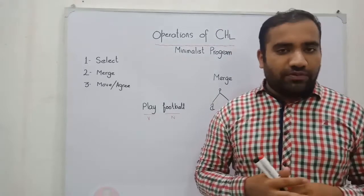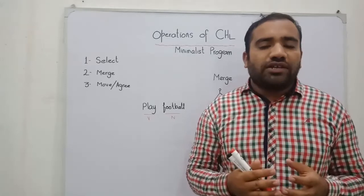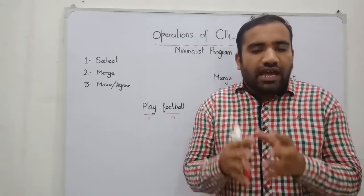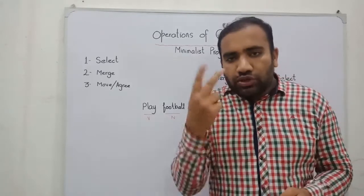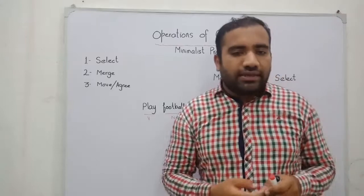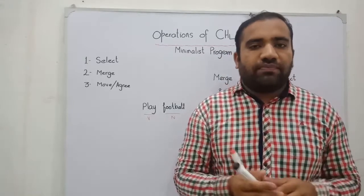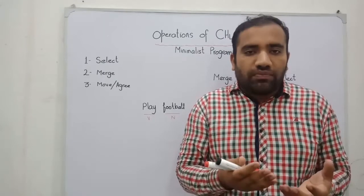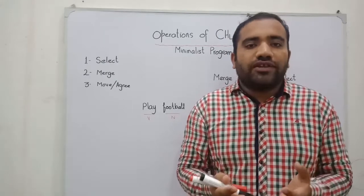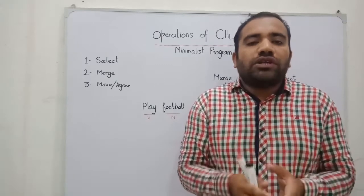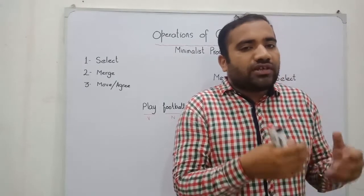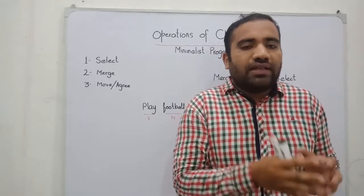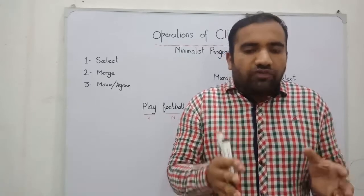Now let's move toward our video. As I told you in the previous video, we have the faculty of human language. In the faculty of human language we have two portions: one is the portion that contains the parts of speech, and the second is the universal system — the Computational System for Human Language — that regulates human language. Its only task is to arrange items and construct sentences, and those sentences must meet the PF and LF levels.